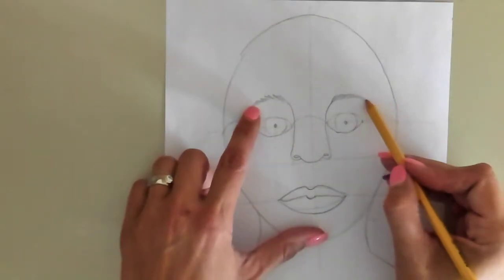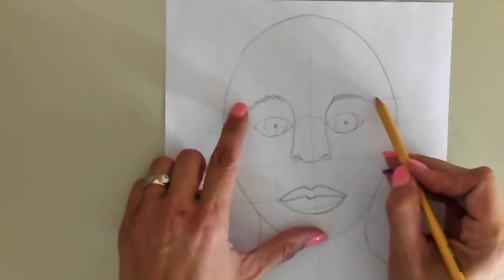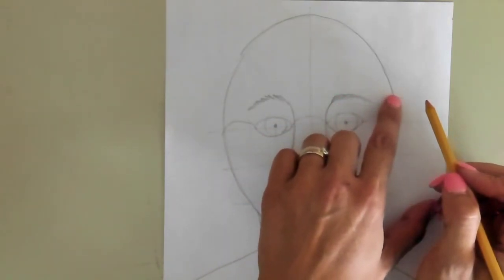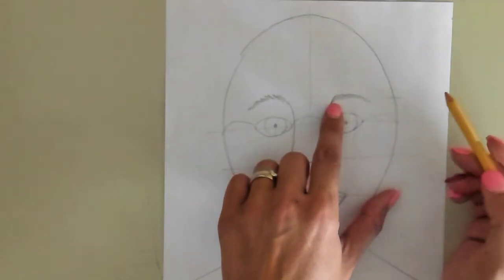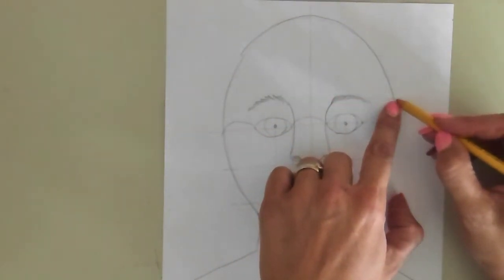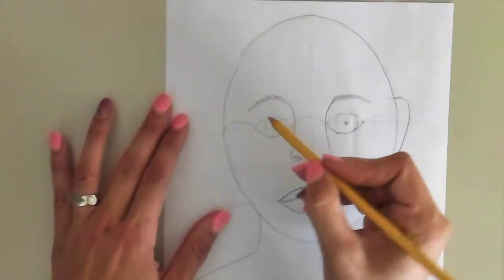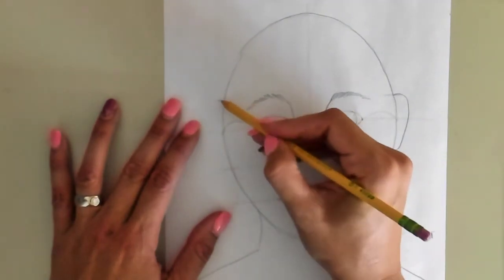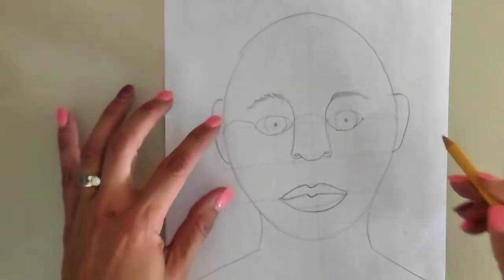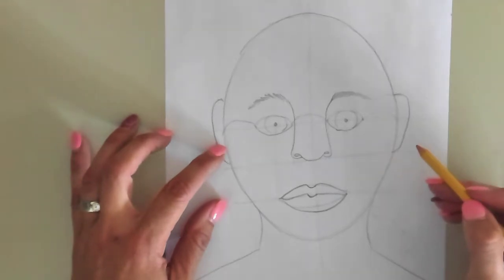Our ears actually line up with our eyebrows. So if you feel on the side of your head where your eyebrow is, and you put your finger way over, you'll see that the top of your ear lines up with your eyebrow, and the bottom of your ear comes down to your nose. So I just draw like a side view of the ear.